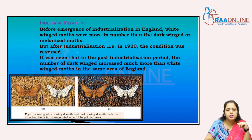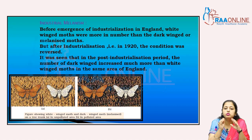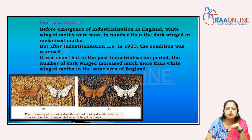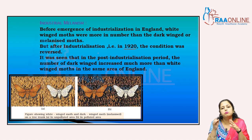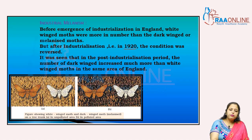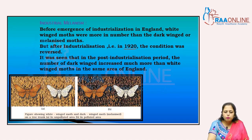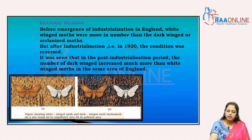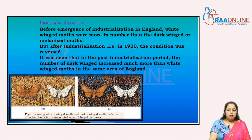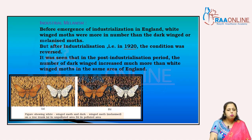Industrial melanism: before industrialization in England, white-winged moths were more numerous than dark-winged moths. But after industrialization, conditions reversed — black-winged moths increased. Before industrialization, the bark was light in color, so white-winged moths were not visible to predators. After deposition of soot on the bark, black-winged moths were hidden from predators while white-winged moths became clearly visible.